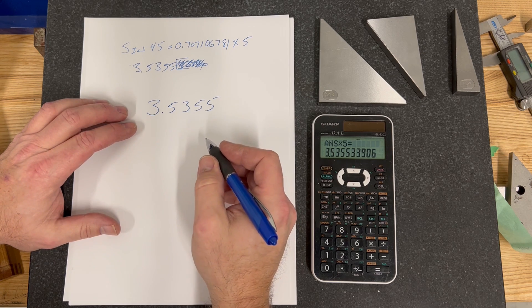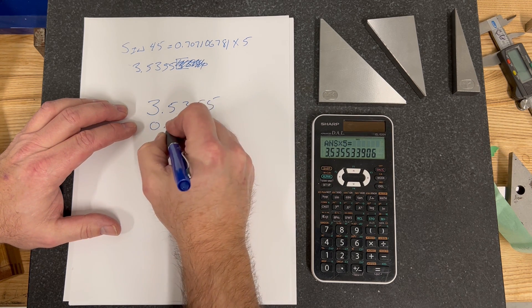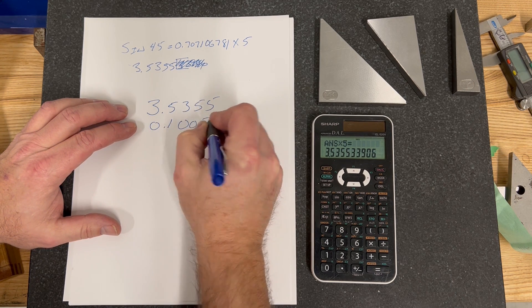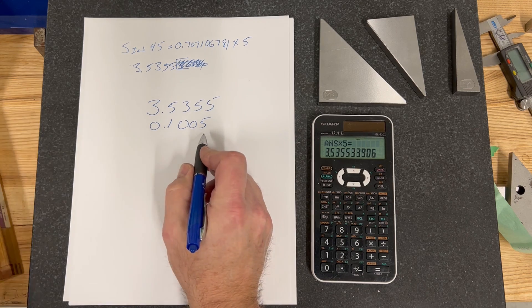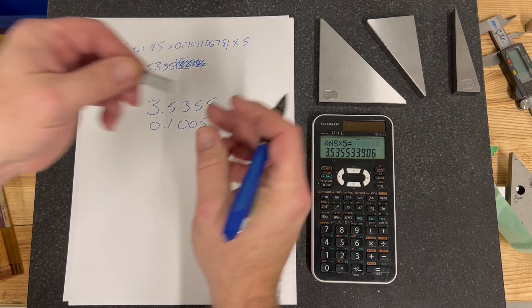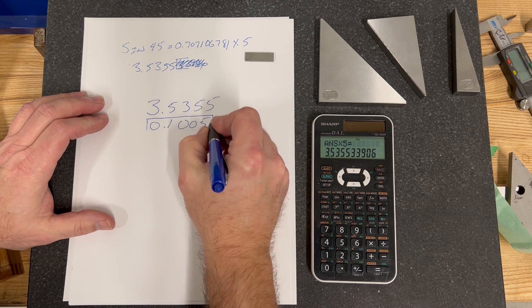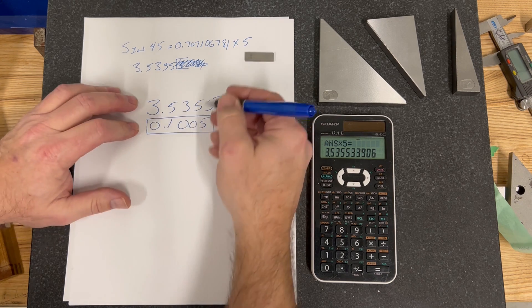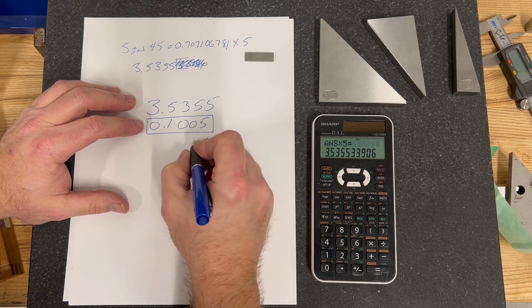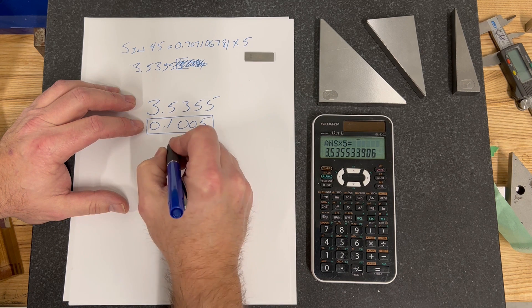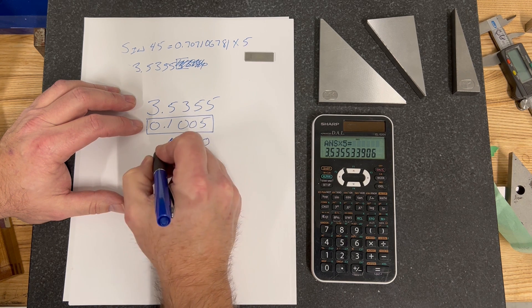Our first gauge block that we're going to use is 0.1005. This is a 5 tenths block. Then we subtract. So that's going to be 0, 5, 3, 4, 3.